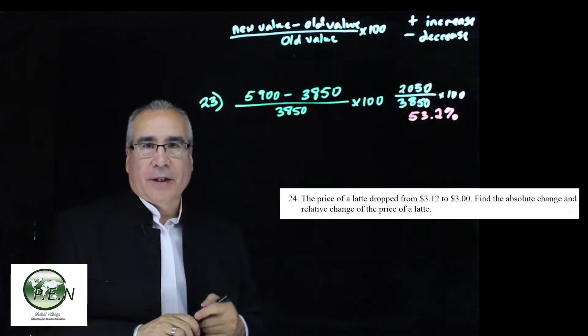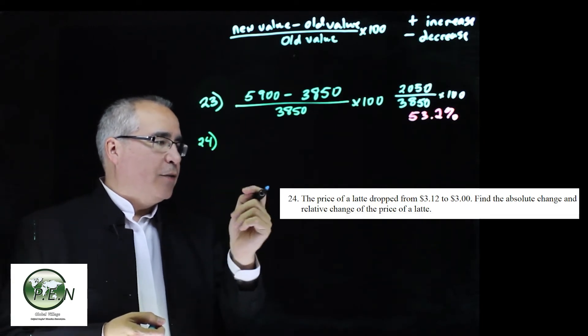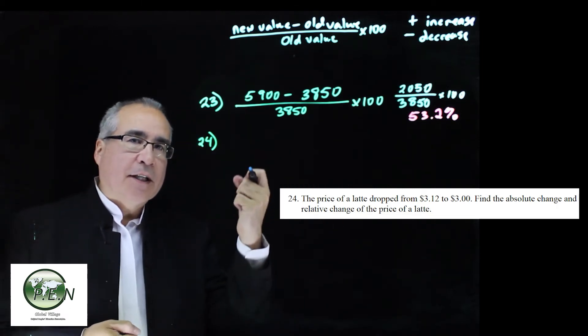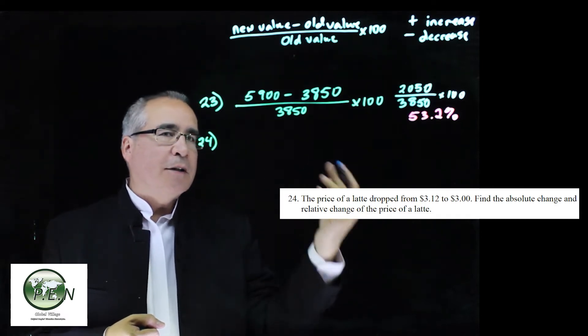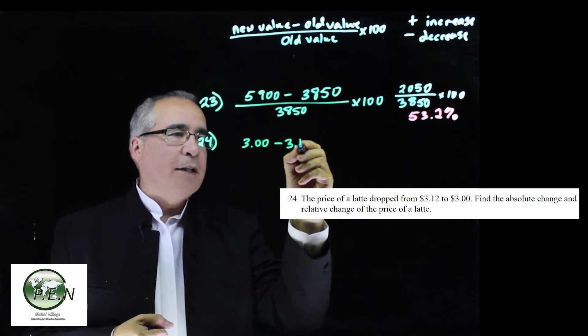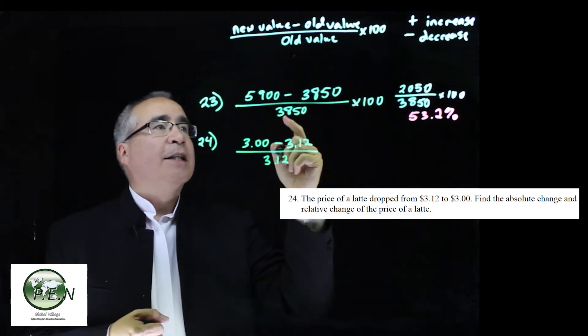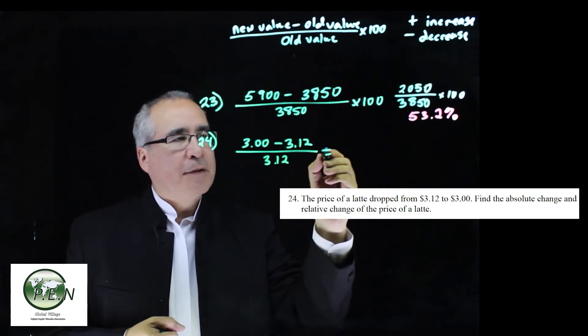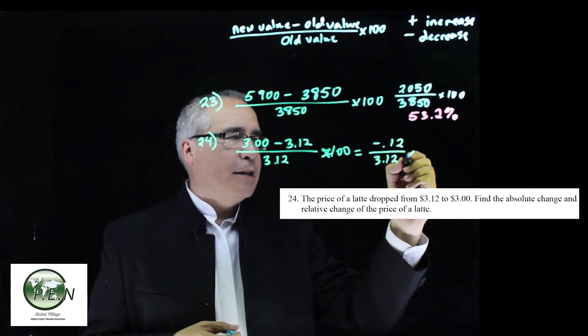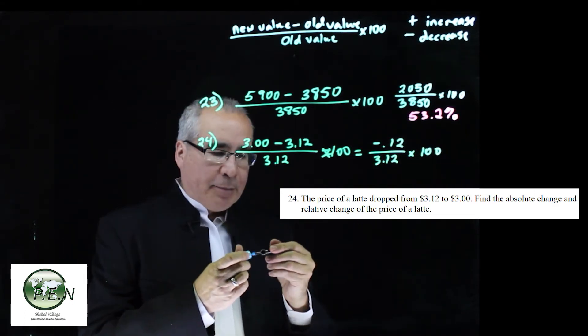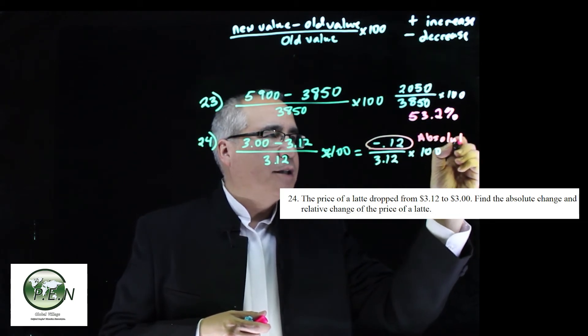Let's take a look at question 24. In 24, we're given two values, the price of a latte dropped from $3.12 to $3.00. We're going to get something negative because it is a decrease. So in this case, it dropped from 3.12 to $3.00. $3.00 is the new value. 3.12 is the old value. And it's always in reference to the old value that we're dividing by. So new minus the old divided by the old. Oops, not equals yet, still multiply by 100. So we get negative 12 cents in the top divided by 3.12 times 100. So just do the subtraction. The absolute change, we found it, it dropped by 12 cents. So this here is the absolute change.